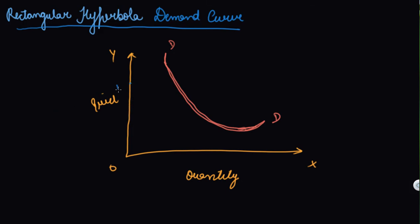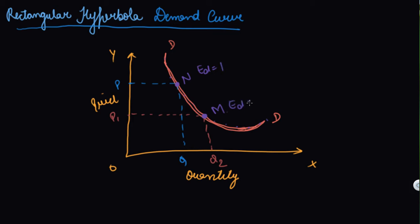This was the price P and your quantity, let's say it was Q. Now this is the price P1. Let's say your quantity has become Q2. What is the property of the rectangular hyperbola? The elasticity of demand at every point — let's say this is your point N and this is your point M — at every point on this rectangular hyperbola, your elasticity of demand will be 1. At this point also elasticity of demand is 1, and at this point also elasticity of demand is 1.